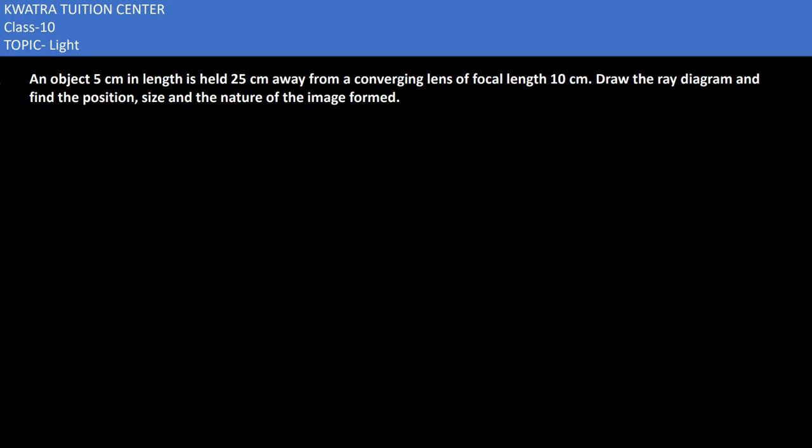Starting with the next part, it says an object 5 cm in length is held 25 cm away from a convergent lens of focal length 10 cm. Draw the ray diagram, find the position, size and nature of the image formed.